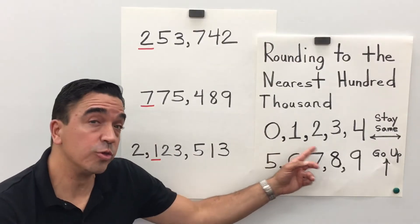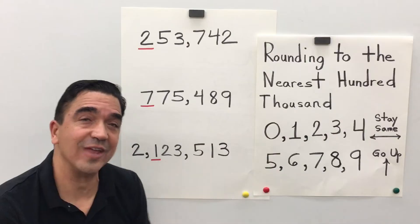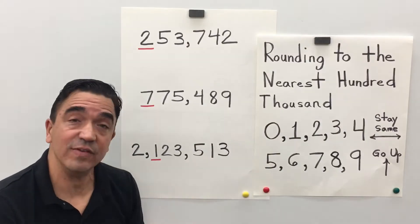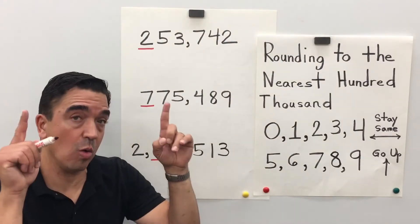0, 1, 2, 3, 4 stay the same. 5, 6, 7, 8, 9 go up.